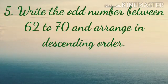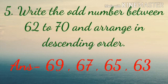Number 5. Write the odd number between 62 to 70 and arrange in descending order. Yes, we have to think and then we will do. The answer will be 69, then 67, 65 and 63.